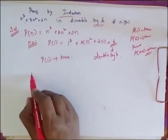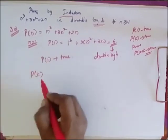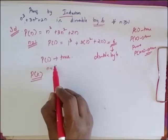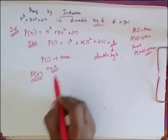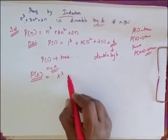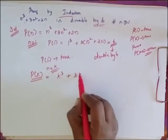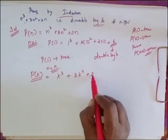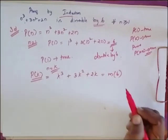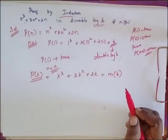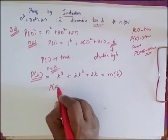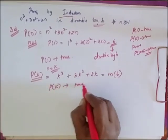Since P(1) is true, I consider that P(K) is true, where n = K. So P(K) is equal to K³ + 3K² + 2K, which is equal to some multiple of 6. So I consider my P(K) is also true.